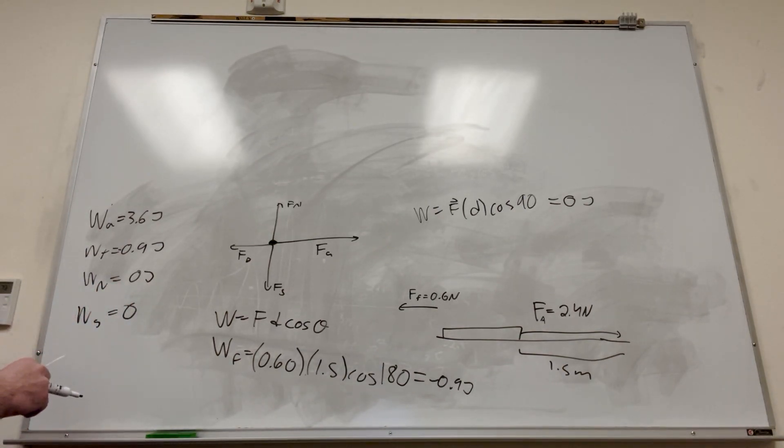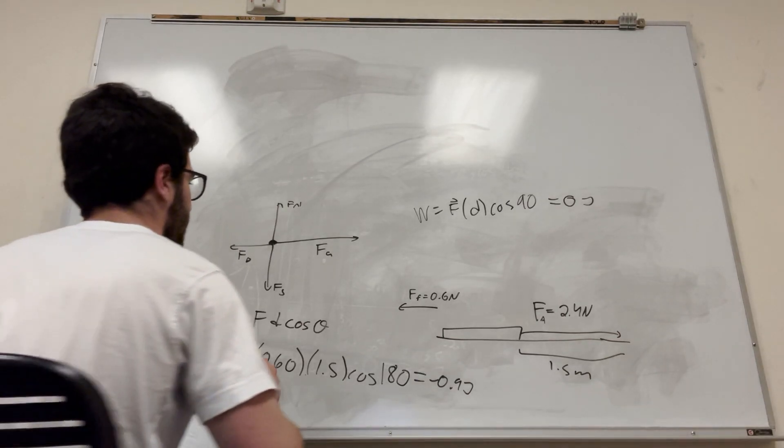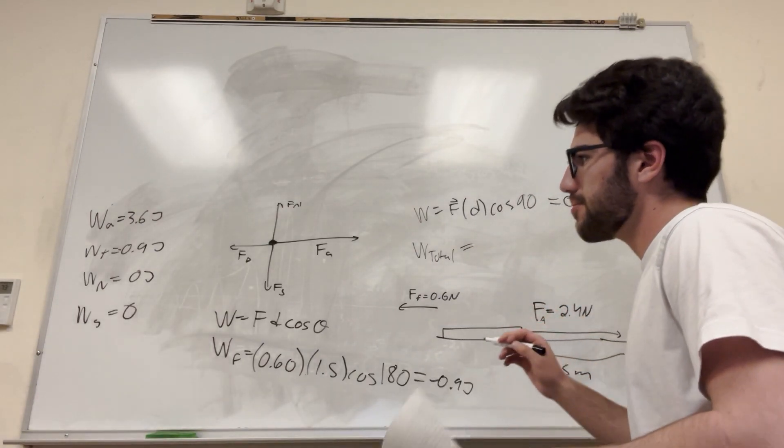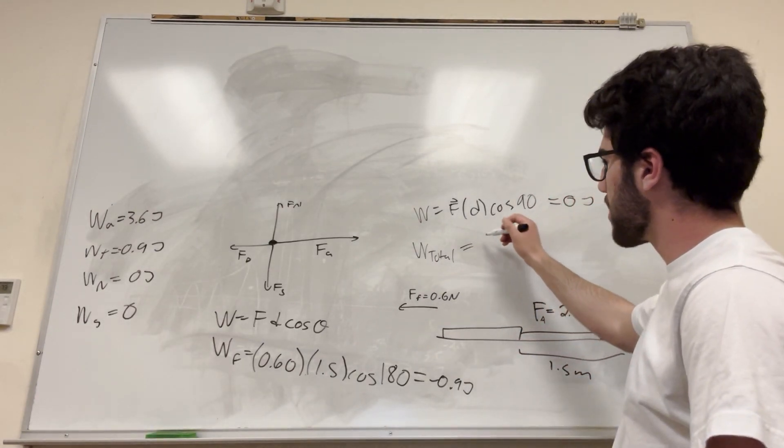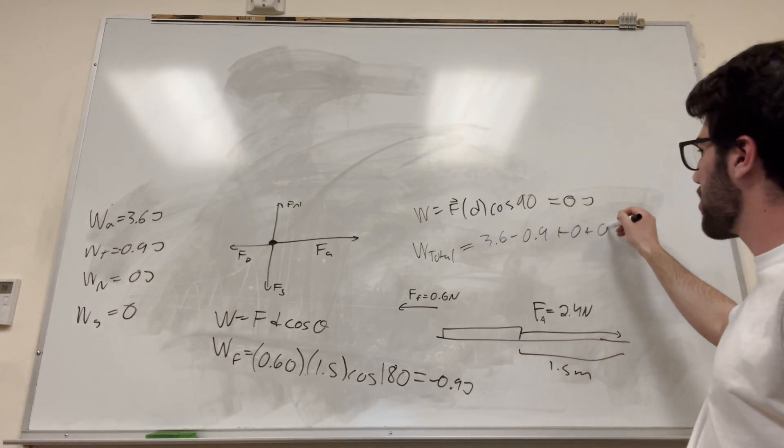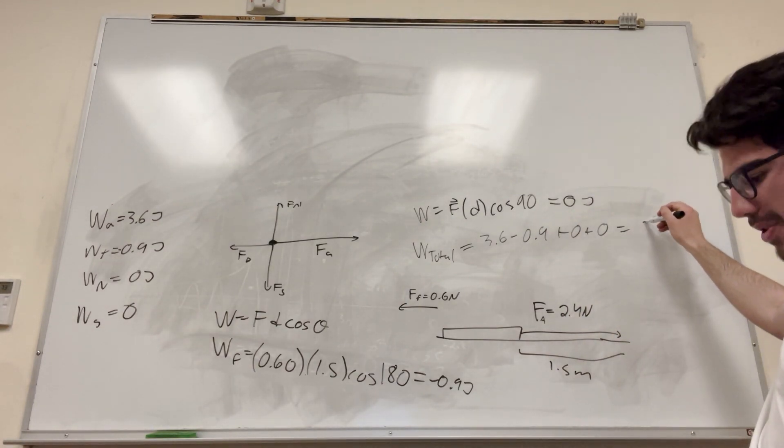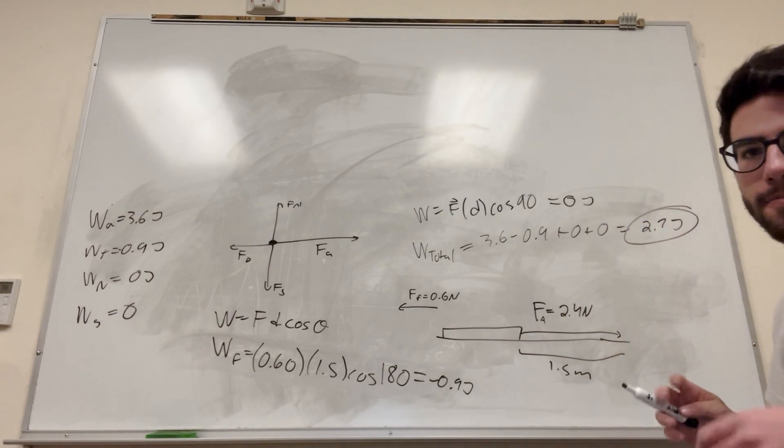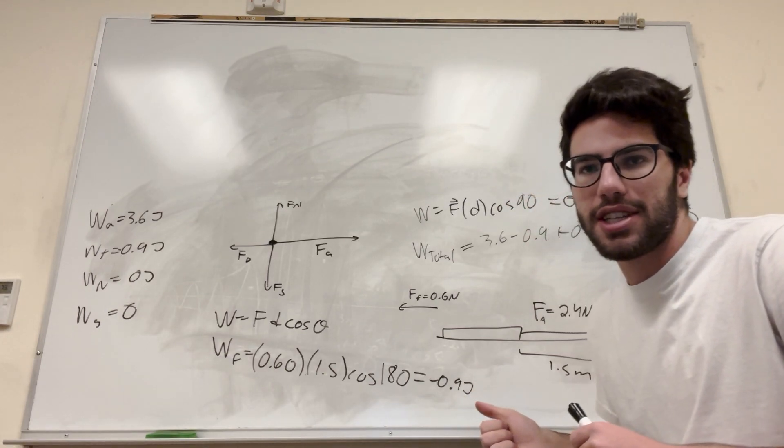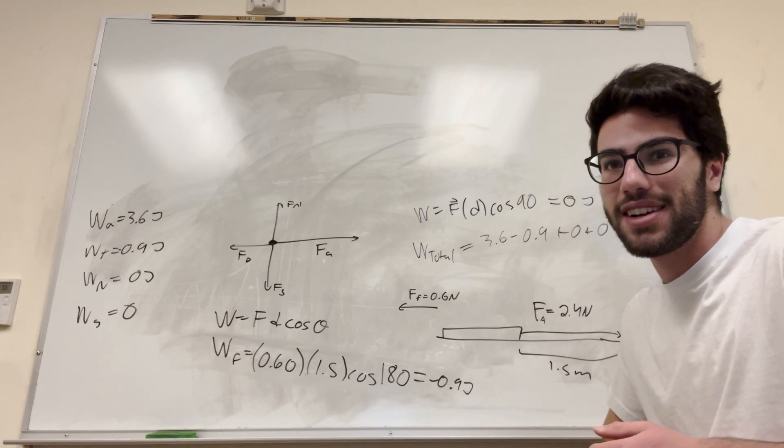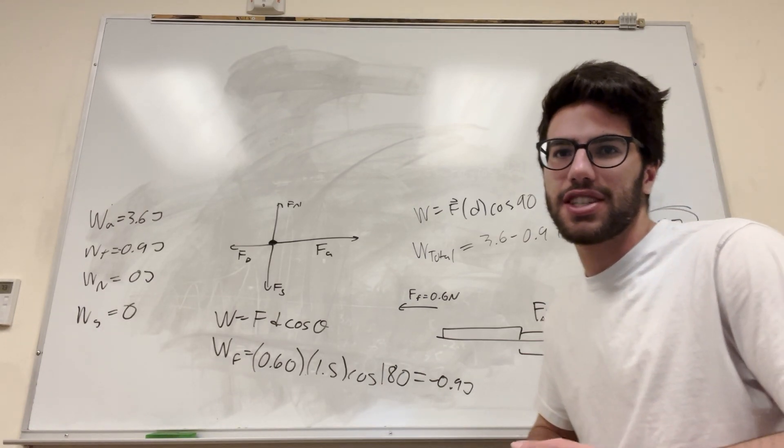And then total work being done on this. Okay, so if you want to find total work, what you're going to do is take all of them and sum it up. So that's going to be 3.6 minus 0.9 plus 0 plus 0. Of course, that's going to give you 2.7 joules. That's the total work being done. Yep. That's it. Alright, so that's how you do these kind of problems. Just learn your work equals force times distance formula, cosine of theta. And yeah, good luck on your physics homework, guys.